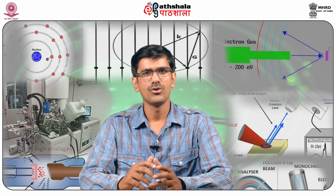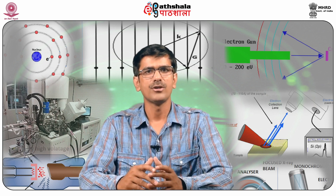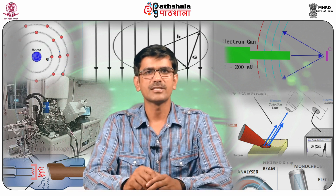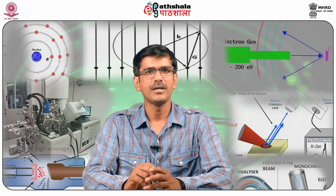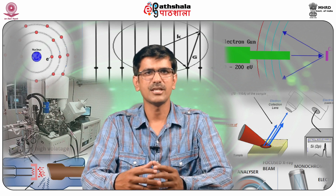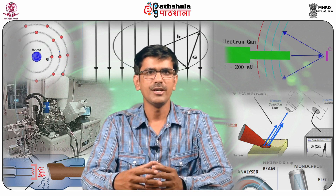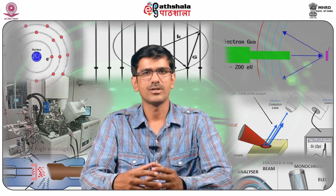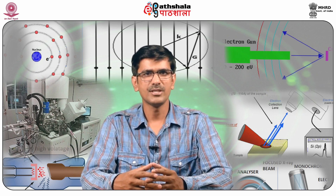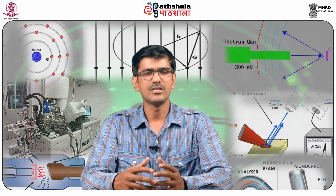These x-rays have high penetration power and can be used even for small particles. They are produced by the excitation of the inner shell by incident electrons. Energy dispersive x-ray spectroscopy involves the excitation of electrons to a higher energy state, requiring input of energy from the surroundings. When the electrons return to a lower energy level, there is a release of energy, resulting in transitions between different energy levels.